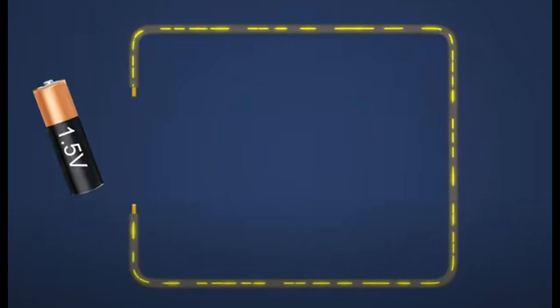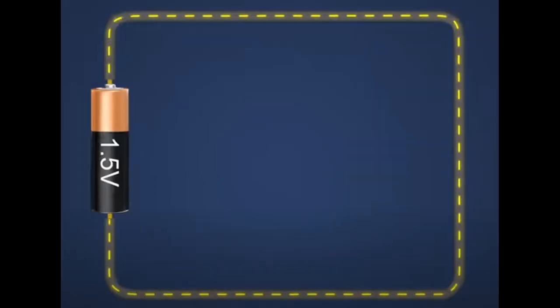In this example, without voltage, the electron will move randomly in all directions. Voltage is what pushes the electron around the circuit.